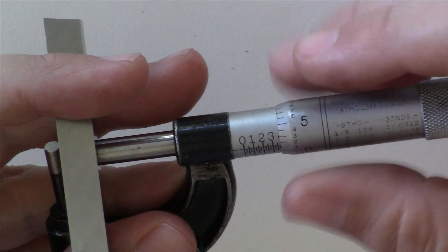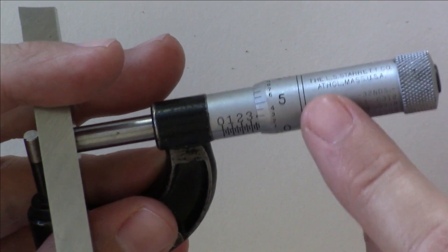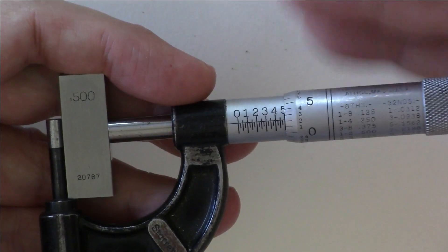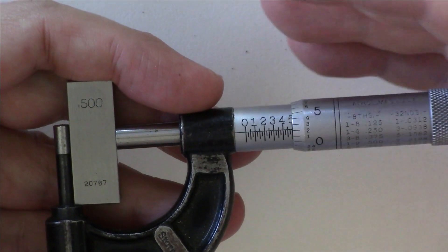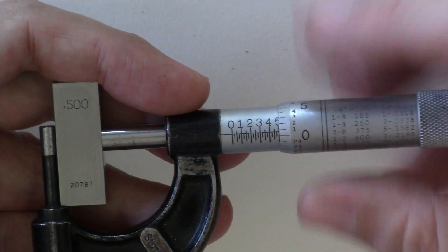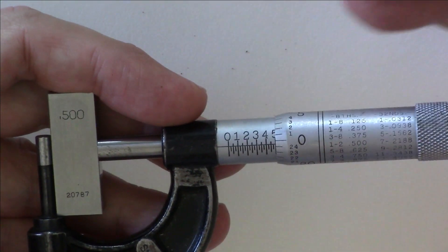Like before, practice until you are getting consistent measurements and get used to how the thimble feels when it slips through your fingers. Obviously, the amount of grip you use will change your results. Too little and your fingers slip early. Too much and you end up going past zero.